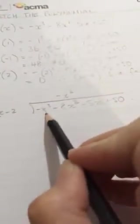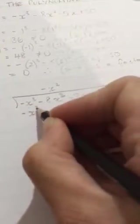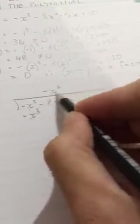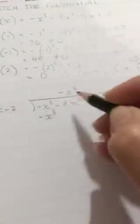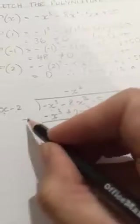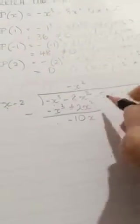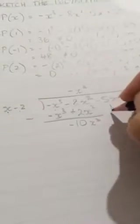So x into negative x cubed goes negative x squared times. Remember you can think about it as what do I need to multiply this by to get that. Then multiply backwards. We've got negative x squared times x is negative x cubed, negative x squared times negative 2 is positive 2x squared. Subtract that away. This minus this is nothing. Negative 8 minus 2 is negative 10x squared. Bring this down.